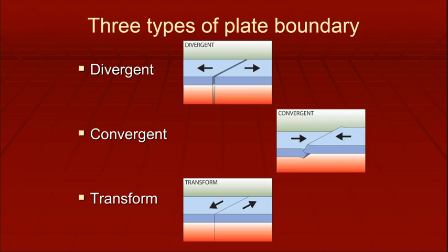There are three types of plate boundaries. You have divergent — they're pulling apart. You have convergent — they're coming together. And you have transform — they're sliding past each other.